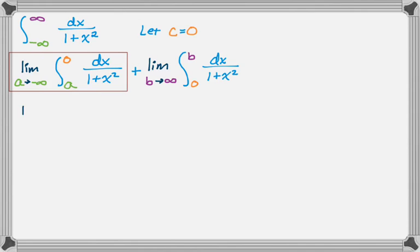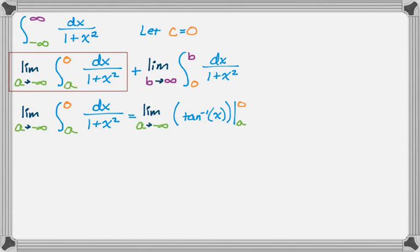And I will do each of these integrals. So the first one becomes this. Hopefully you recognize 1 over 1 plus x squared is just arctan. So that's arctan from a to 0, which is going to be a limit as a approaches negative infinity of the arctan of 0 minus the arctan of a.